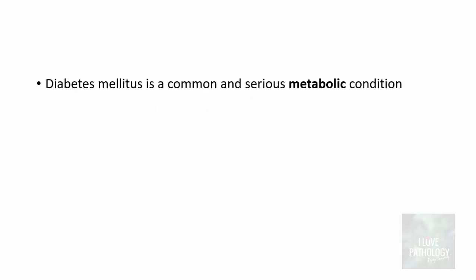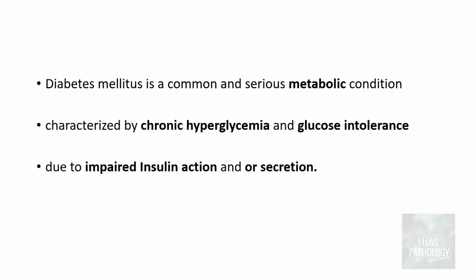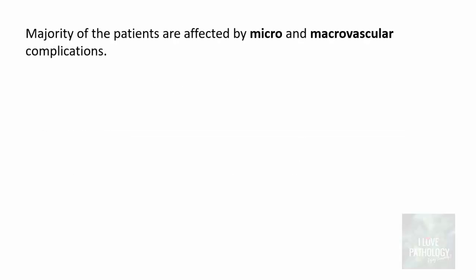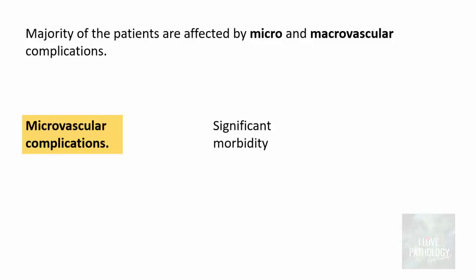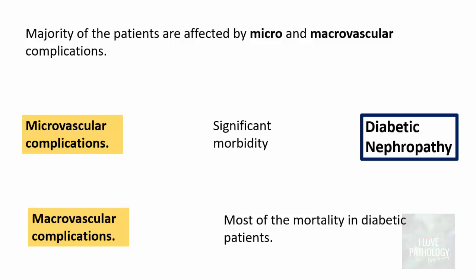Diabetes mellitus is a common and very serious metabolic condition characterized by chronic hyperglycemia and glucose intolerance, which is due to impaired insulin action and/or impaired insulin secretion. The majority of patients are affected by micro and macrovascular complications. Microvascular complications have significant morbidity, while macrovascular complications account for most mortality. One important microvascular complication is diabetic nephropathy.